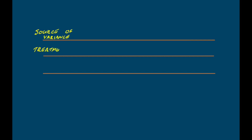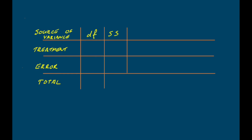If you use a computer to calculate an ANOVA table, some details might look a bit different — sometimes you won't have the bottom row, and sometimes things are labeled slightly differently — but the structure is generally the same. On the left-hand side we have the sources of variance: treatment, error, and total. We then have columns for degrees of freedom, sums of squares, mean squares, F, and P. Let's look at how to fill these in, starting with the degrees of freedom.